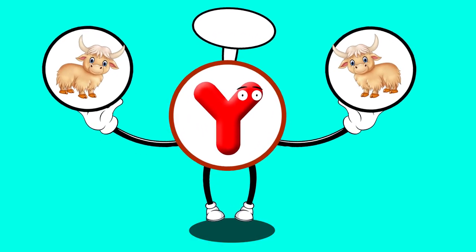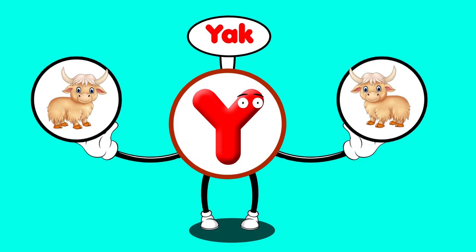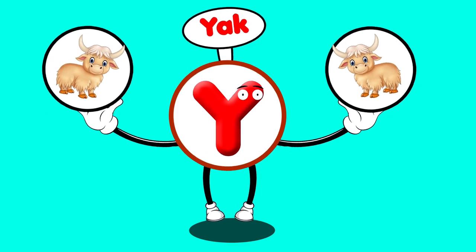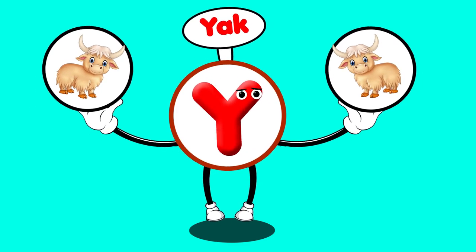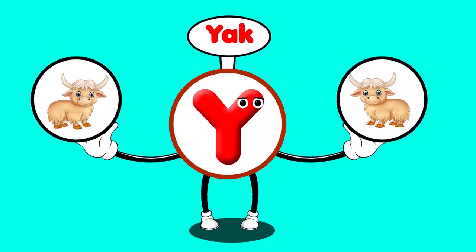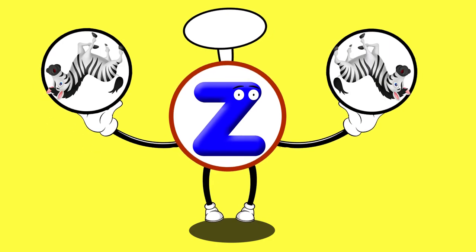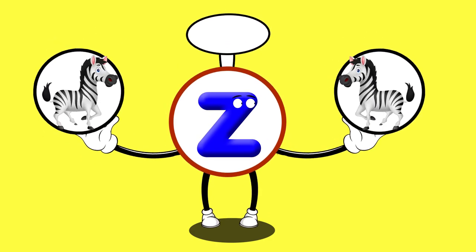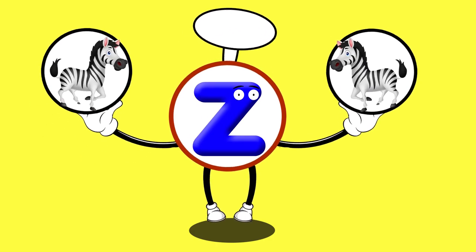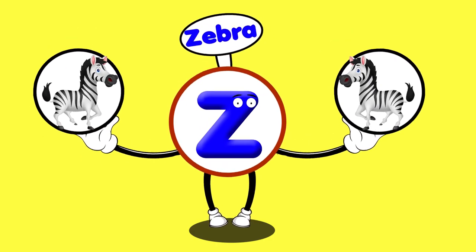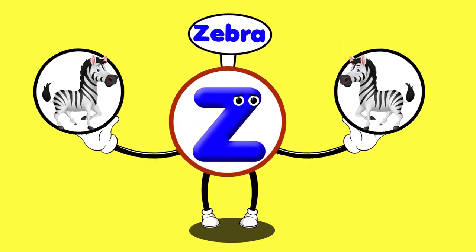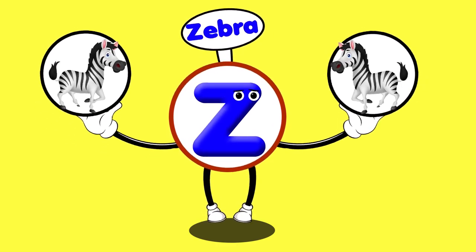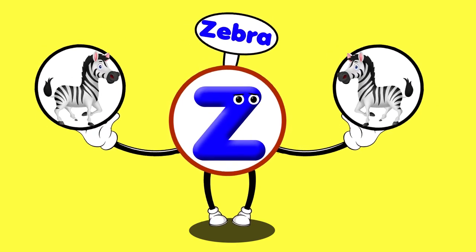Y, y, y, ya. Y, y, ya, ya. Y, ya. Z is for zebra. Z-z-zebra, z-z-zebra, z-z-zebra, z-zebra.